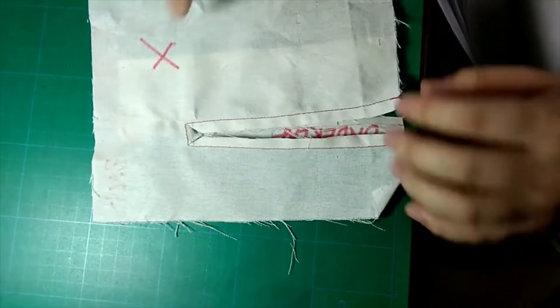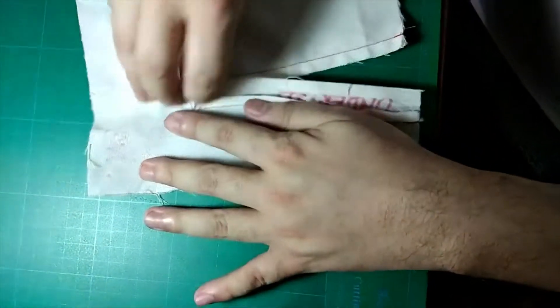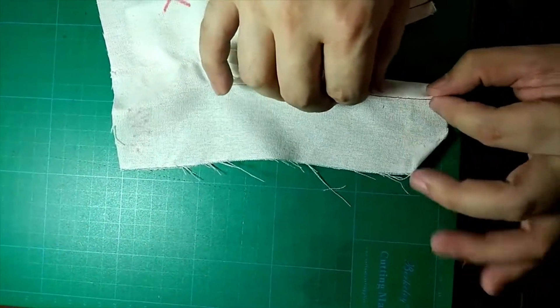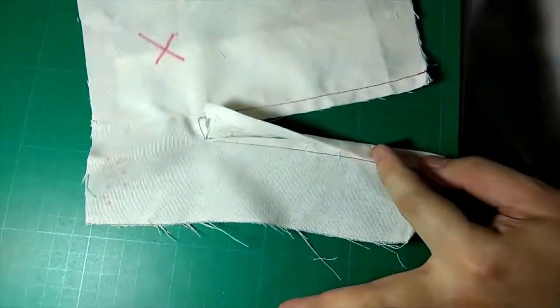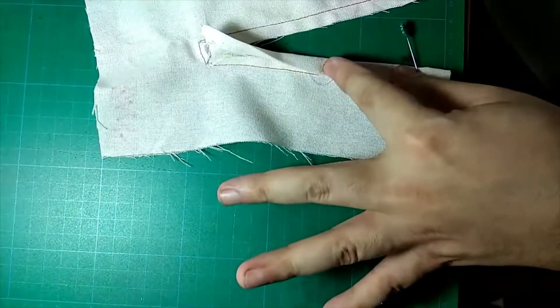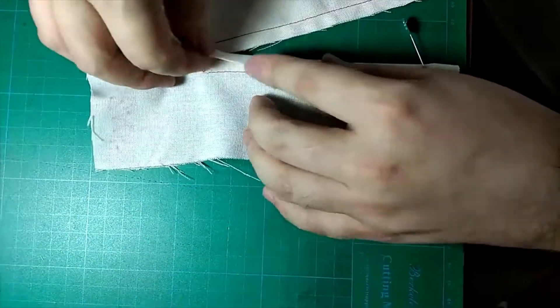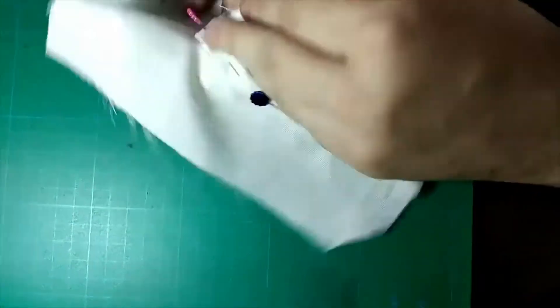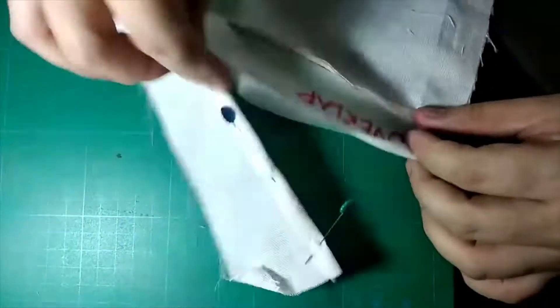Next we're going to turn everything underneath. We're facing the wrong side. Turn around your underlap. On the folded side, we're going to cover the seam allowance and then pin it. We're going to stitch this later, so pin everything. We're going to do the same thing with the overlap. Turn it around and then we're going to cover the seam allowance as well.